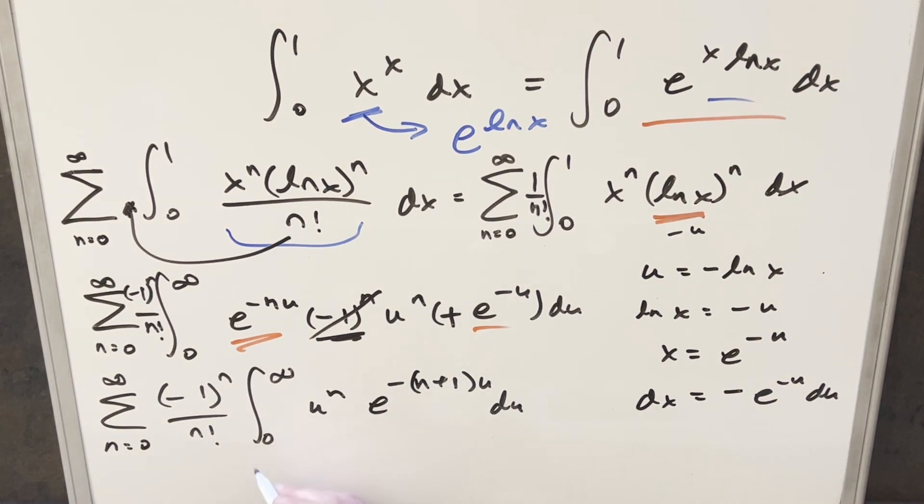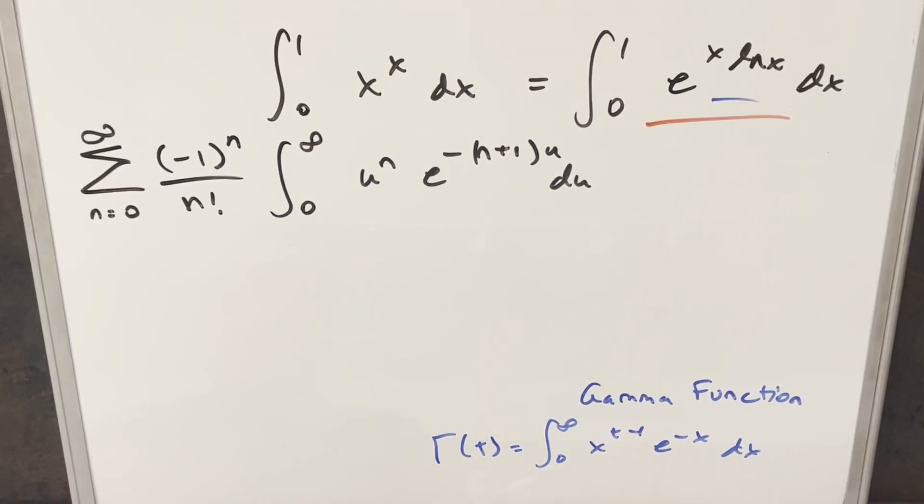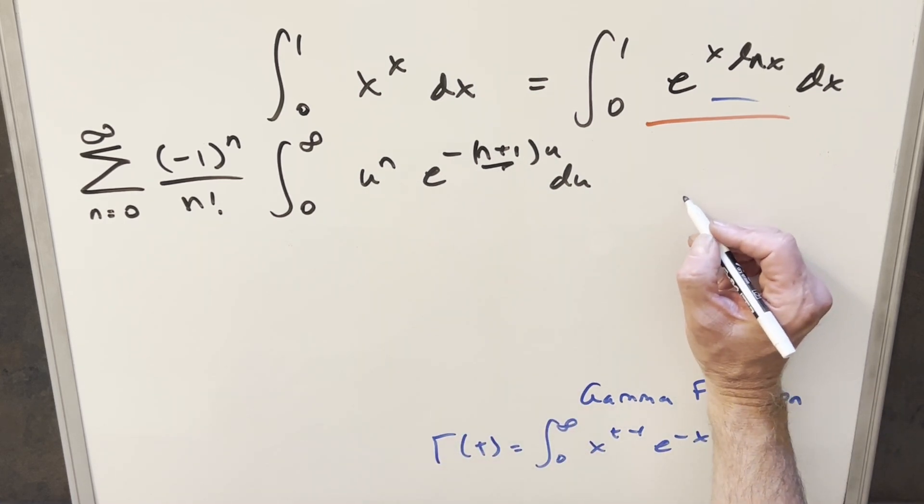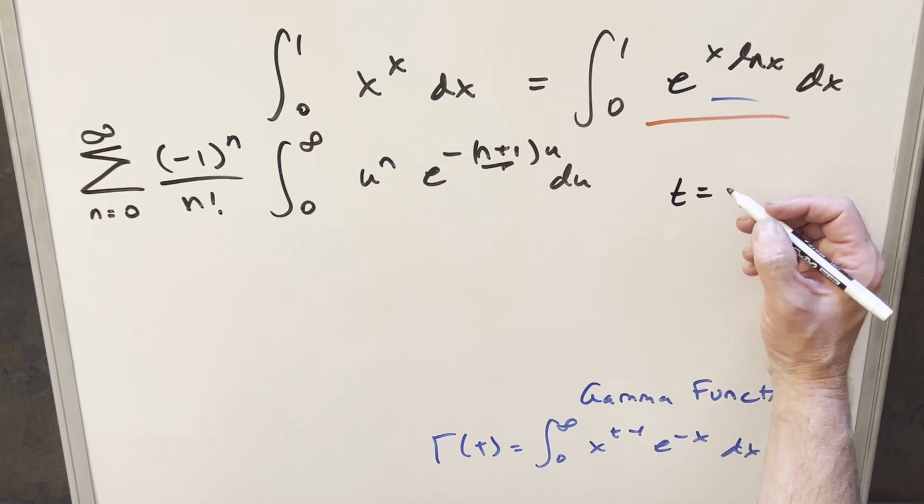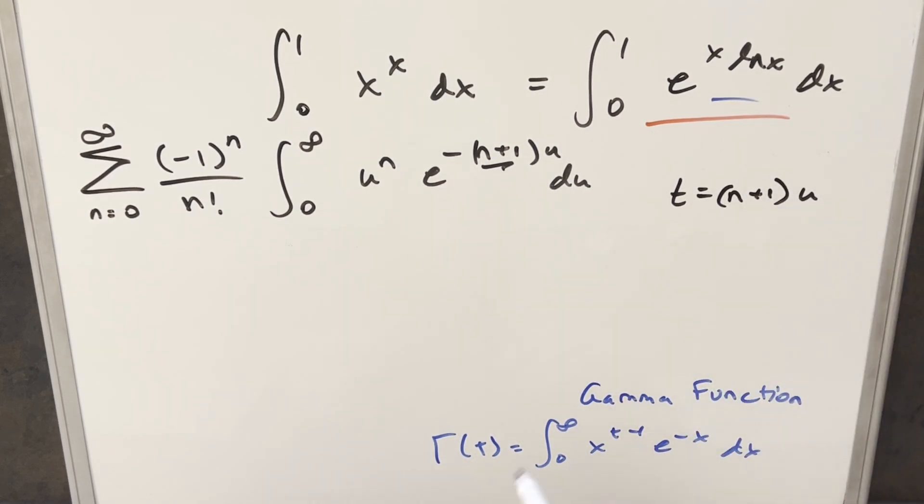But then at this point, we notice that this right here, this is really close to our gamma function. Okay, so we have our formula for the gamma function over here to the right. And again, we just really need this part to be a 1 if we want to match this formula. I mean, we need to adjust this n, but really we have e to the minus x here, so we need to do something with that. Well, it's just going to be a simple substitution. What I'll do here, let's use t because we already used u. So I'll set t equal to (n plus 1) times u.